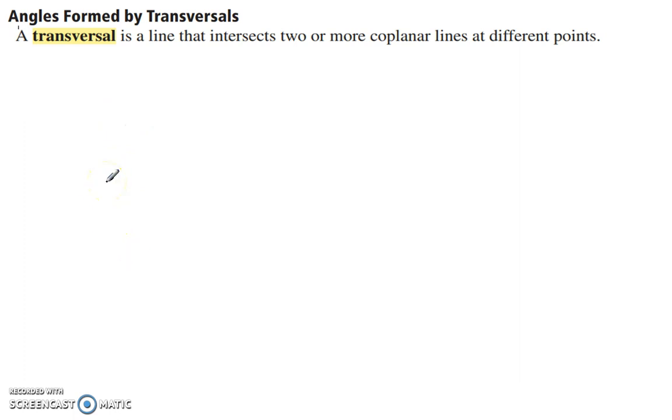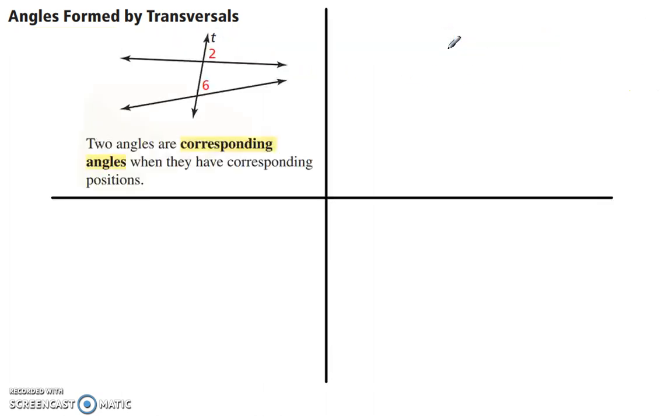Okay, up until now we've only looked at transversals through parallel lines. We are looking at transversals through two or more coplanar lines. Okay, so here is a transversal. It is going through these two coplanar lines and it crosses at two different points.